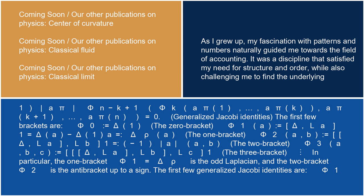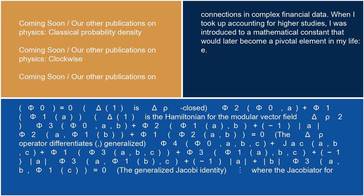The first few generalized Jacobi identities are: phi_1(phi_0) equals 0 (delta_rho is closed); phi_2(phi_0, a) plus phi_1(phi_1(a)) equals 0 (delta(1) is the Hamiltonian for the modular vector field delta_rho squared); phi_3(phi_0, a, b) plus phi_2(phi_1(a), b) plus (minus 1)^|a| · phi_2(a, phi_1(b)) plus phi_1(phi_2(a,b)) equals 0 (the delta_rho operator differentiates the bracket, generalized); phi_4(phi_0, b, c) plus further terms involving phi_3 and phi_1 equal 0.